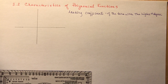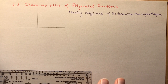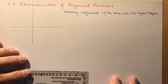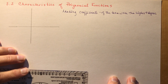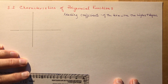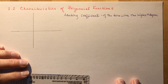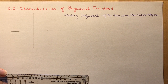3.2 Characteristics of Polynomial Functions. Today we're going to talk about leading coefficients, end behaviors, and which quadrant a function should be starting and ending in. It's very simple.